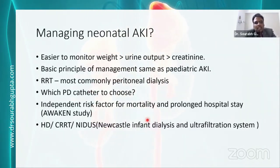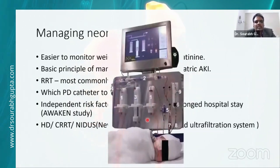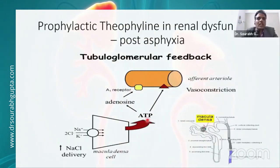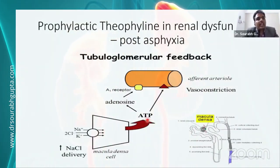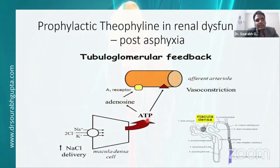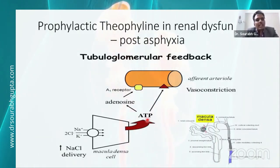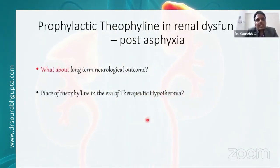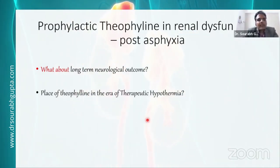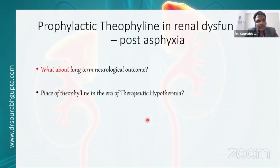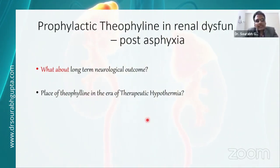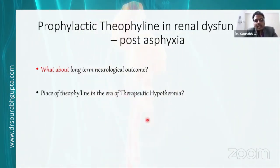Prophylactic theophylline post-asphyxia has been studied and shown to prevent AKI, probably by inhibiting tubuloglomerular feedback. Recently caffeine, in analysis by the Wiccan group, was also shown to decrease the risk of AKI in their cohort by a similar mechanism. However, for theophylline specifically, the long-term neurological outcome is unclear, and with current therapeutic hypothermia, its place is uncertain. KDIGO recommended it in 2012 with a weak recommendation, but in the current era it is probably not of much interest or use. Thank you very much.